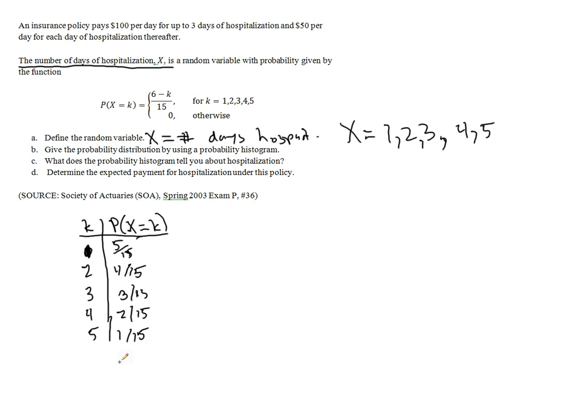So once you get to six days, there's a zero percent chance. And then you start getting negative probabilities, and that gets weird. But if you notice, if you add 5 plus 4 is 9, plus 3 is 12, plus 2 is 14, plus 1 is 15. So this constitutes all the possibilities, and it's given by this nice little function. So here's our probability distribution.